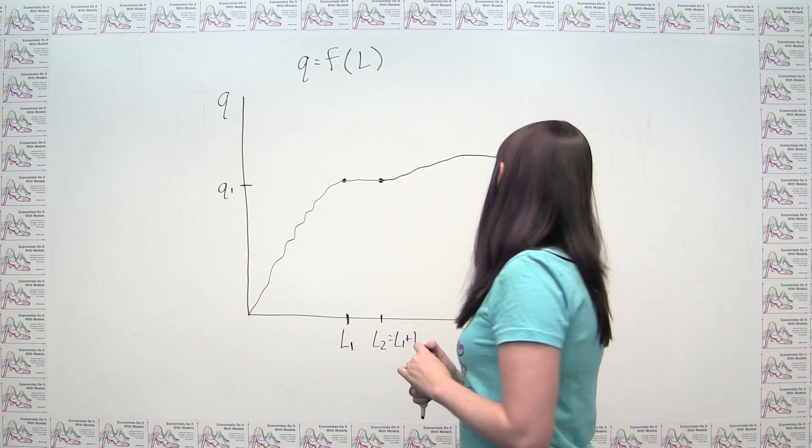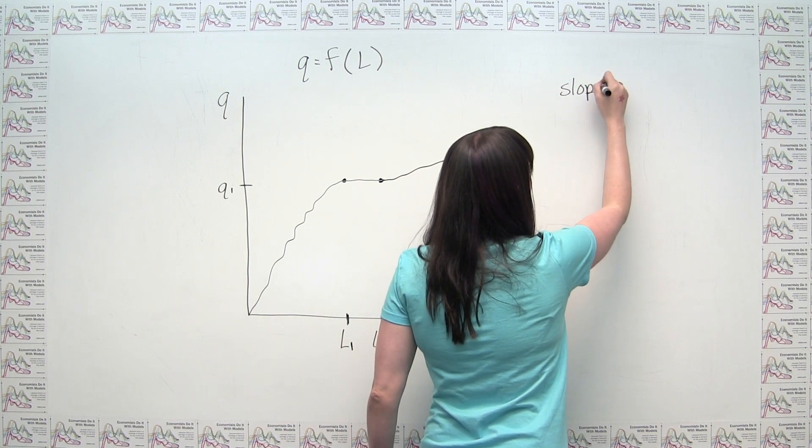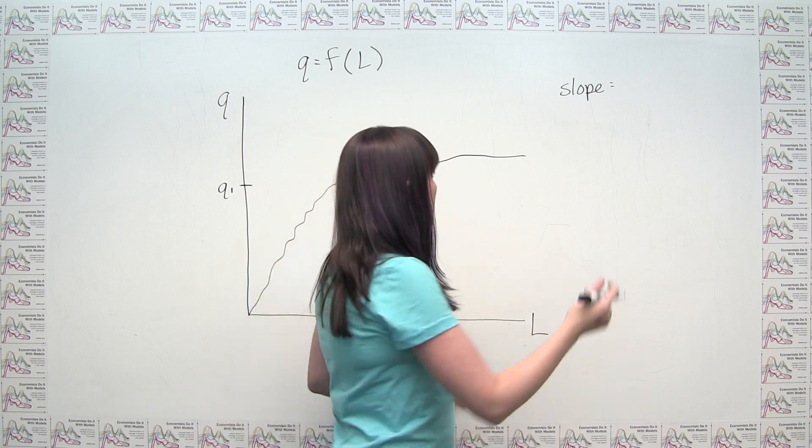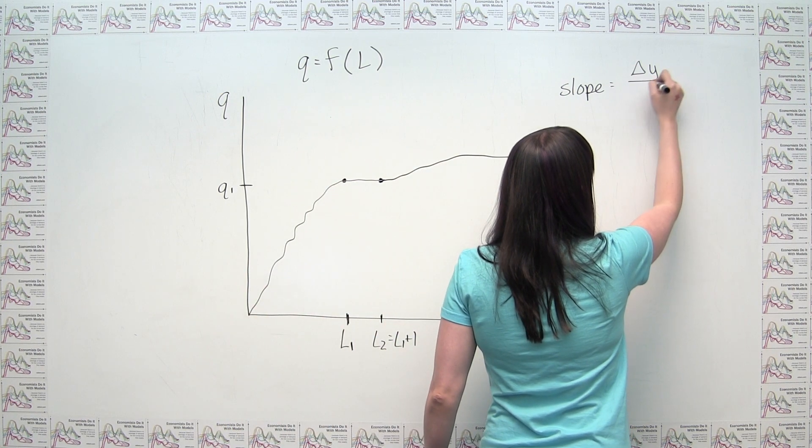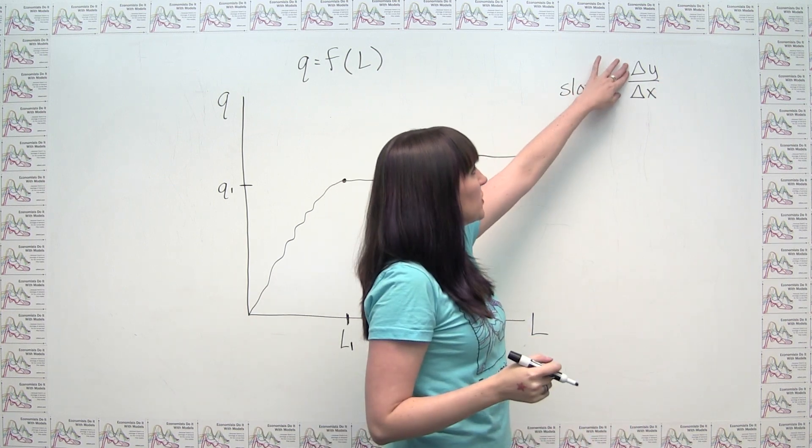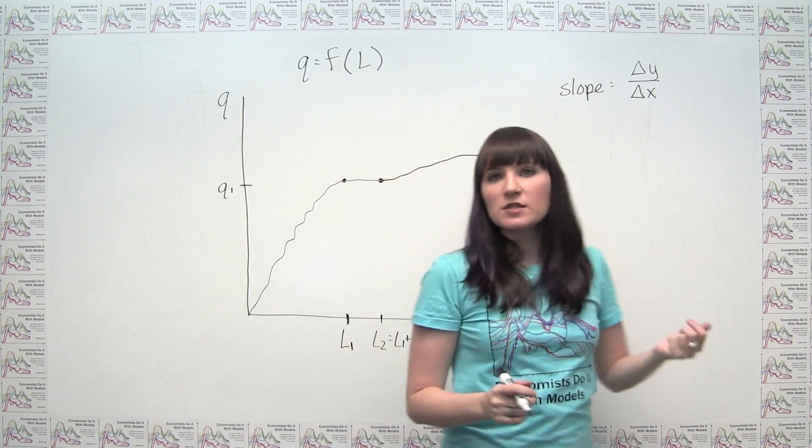Our question is asking us for the slope of the production function at this point or in this region, I suppose. We know mathematically we can say that slope is just rise over run. Sometimes you hear it that way. I'll say change in Y over change in X, right? The change in Y would be the rise, the change in X would be the run.